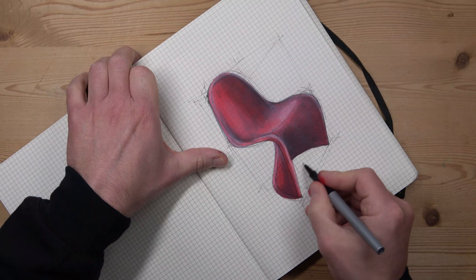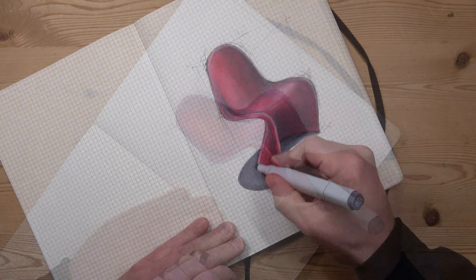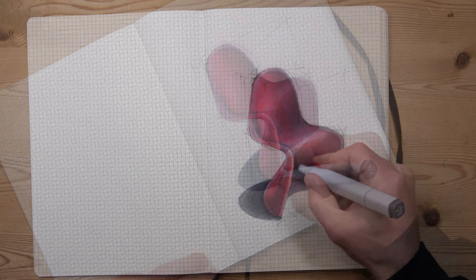Now the addition of a cast shadow is great for anchoring a sketch to the page. The process gives authority to a sketch, and the depth of tone in a shadow can really make an object pop up off the page.